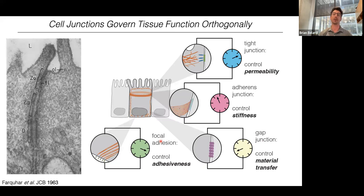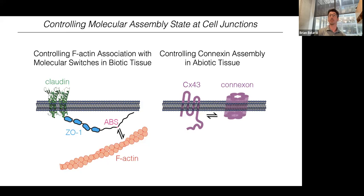Further below along the lateral surface is the gap junction, which controls material transfer; and lastly, there are focal adhesions that control adhesiveness to the underlying substrate. Since each of these junctions controls its function somewhat orthogonally, it might be possible to tune each parameter independently. We would look at the molecular assembly state at each junction and engineer it so we might manipulate that molecular assembly state and, in turn, control these macroscopic properties of tissue.